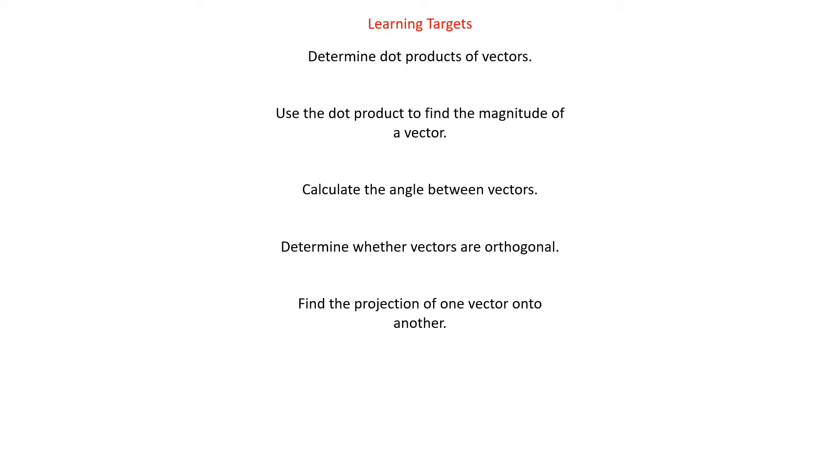So our learning targets, we're going to determine dot products of vectors. We're going to use dot products to find the magnitude of a vector, calculate the angle between vectors, determine whether vectors are orthogonal. That's a big fancy word that basically means perpendicular. It's a little bit more than perpendicular, it's like three-dimensional perpendicular, but right now we're on a plane, and so it's perpendicular. And then find the projection of one vector onto another.